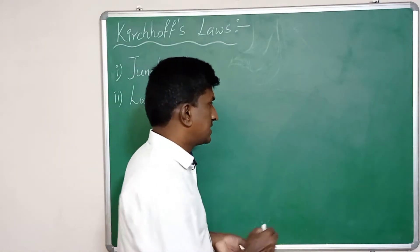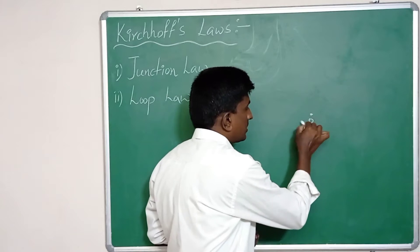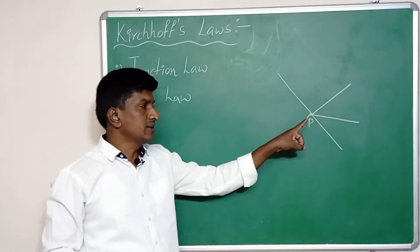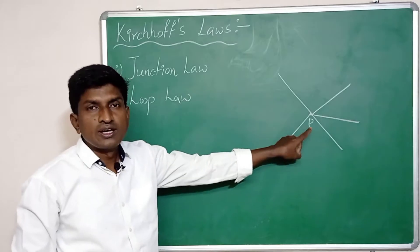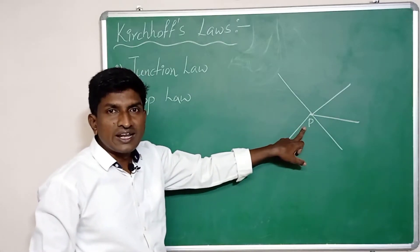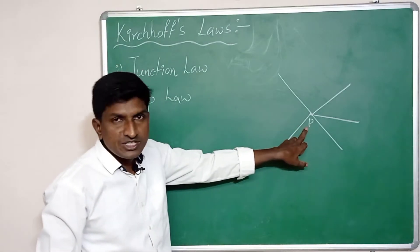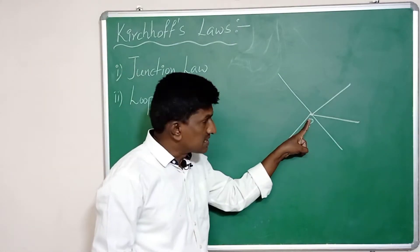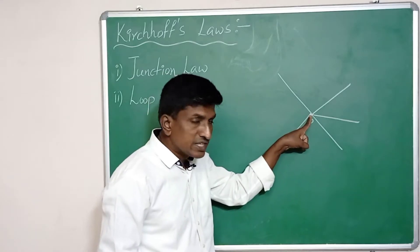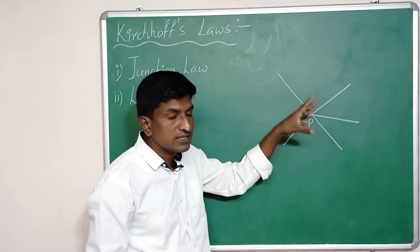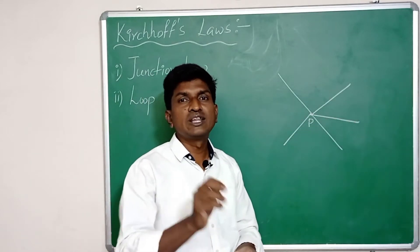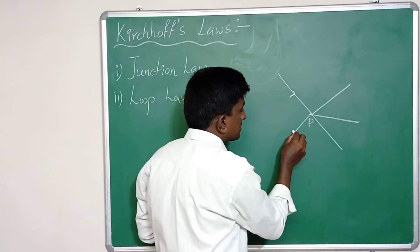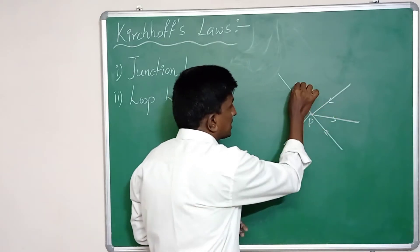Let us discuss the junction law. Let us consider a point P where five wires are connected. A junction is where three or more connecting wires meet, so P is a junction. According to the junction law, at any junction the sum of currents into the junction equals the sum of currents leaving the junction.